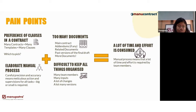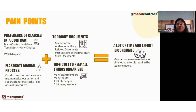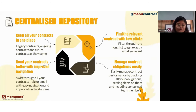Moving on to post-signature, once a contract is signed, reading and understanding it becomes difficult — scrolling, flipping, or using Control+F to navigate is time-consuming. The absence of easy navigation means a lot of time and effort is consumed. However, with a CLM tool, this can be changed through a centralized repository.